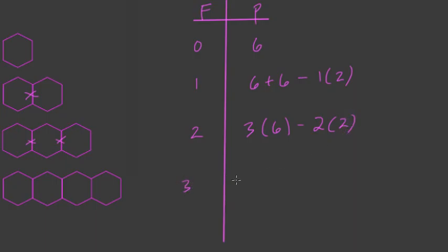Then for the third figure, we have 4 groups of 6, 4 hexagons, each with 6 sides, minus 1, 2, 3 groups of 2. Now this one's a little bit more complicated to put into a formula, but really gives us some mental flexibility in dealing with these kind of patterns.